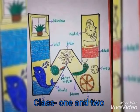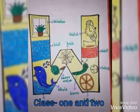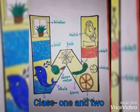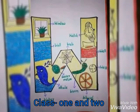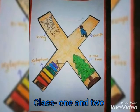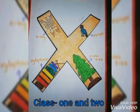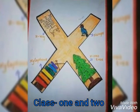W for window, window means janala. W for well, well means bhalo.